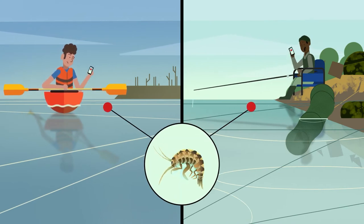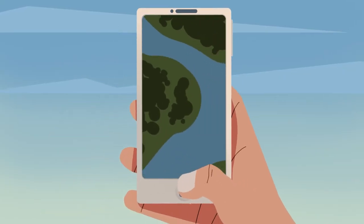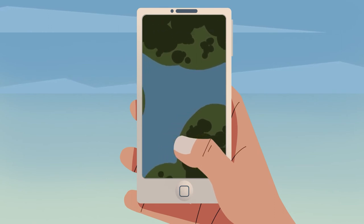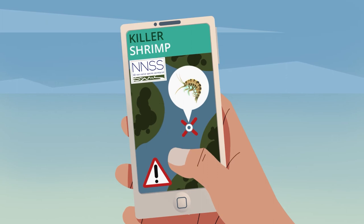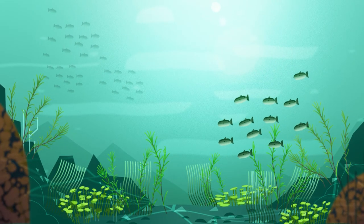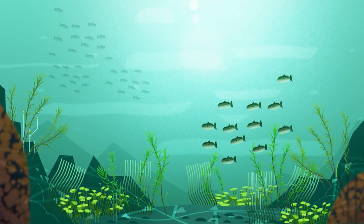If you should spot a killer shrimp, report it. The sooner it is reported, the quicker action can be taken to stop further spread and protect the environment. Note your location, take a photo and submit your record online via phone or computer. The whole delicate ecosystem relies on us all, doing our bit.